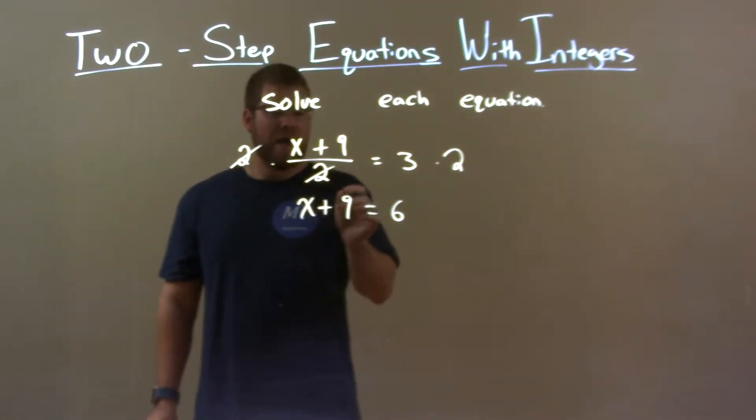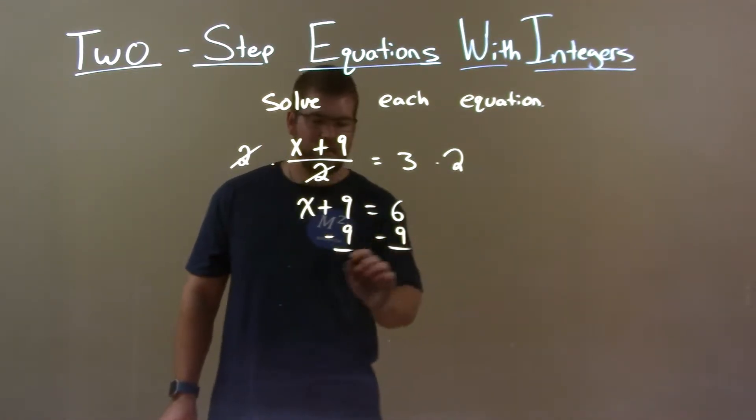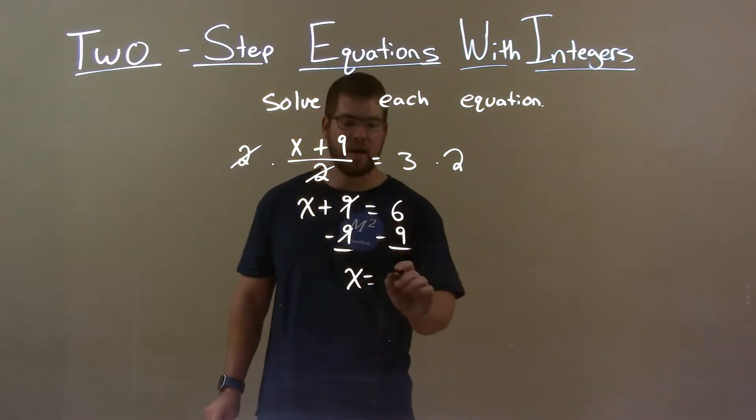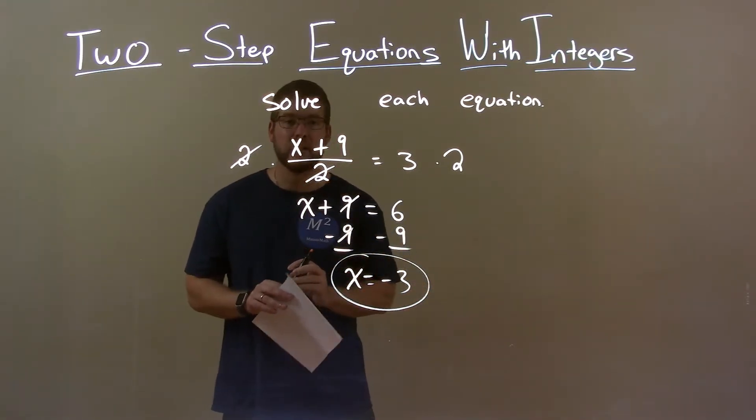Then we're adding 9, so opposite of addition is subtraction. I subtract 9 from both sides. This gives me, the 9's cancel, x by itself here. And 6 minus 9 is negative 3. And so my final answer here is x equals negative 3.